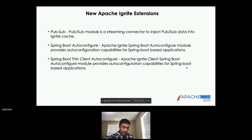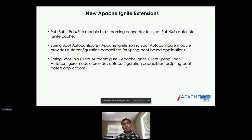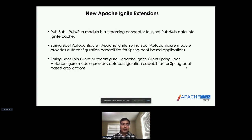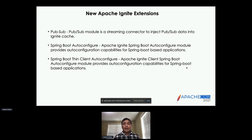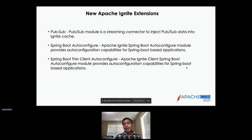While the community has been migrating these extension modules to a new repo and working through the build pipeline, in addition to the current set of supported extensions, we have also seen new extensions being contributed by the community. Some of the new extensions now in Apache Ignite include a Pub/Sub module, which is a streaming connector to inject Pub/Sub data into Ignite cache, and a Spring Boot auto-configure and thin client auto-configure for Spring Boot, which means Ignite can be used as a data store and will get auto-configured when you start your Spring Boot application.